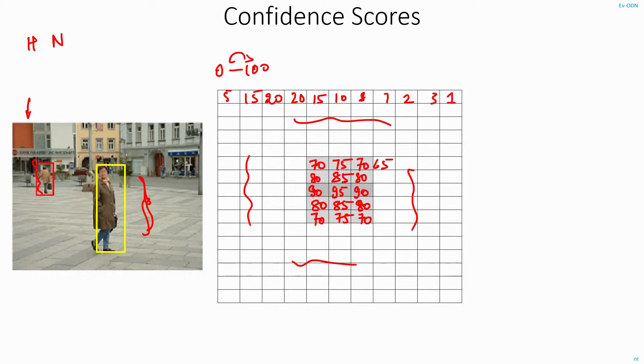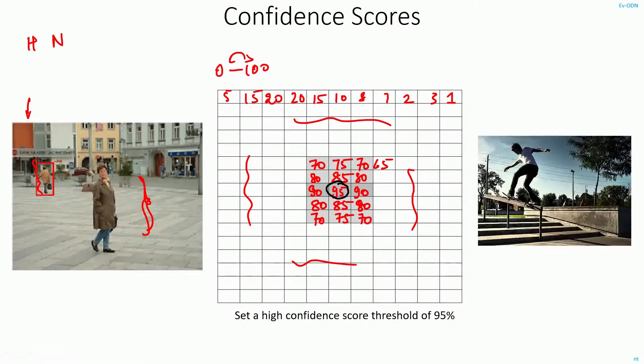It's no brainer here, I can just use a confidence score threshold of 95% and select only the correct bounding box and ignore all the others. This definitely would work in this case. But what happens if I try the same approach on some other image? Let's see.